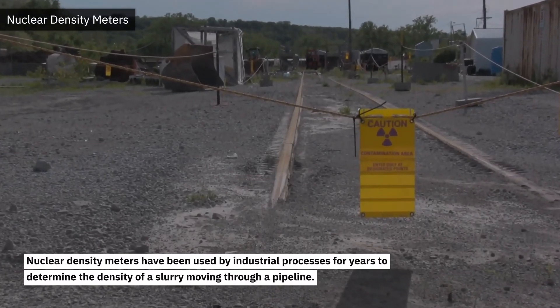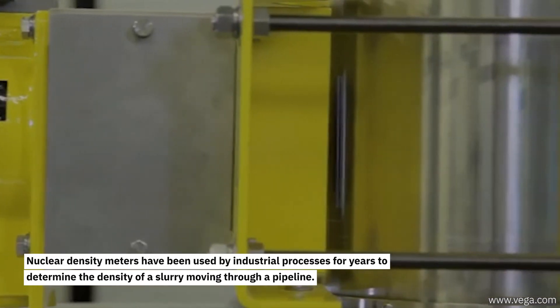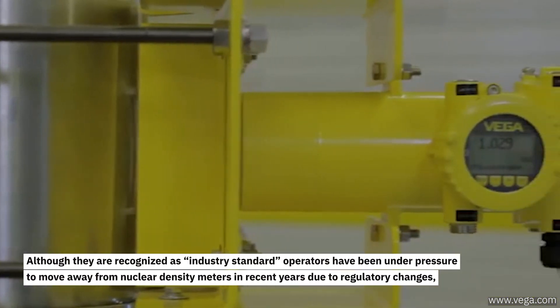Nuclear density meters have been used by industrial processes for years to determine the density of a slurry moving through a pipeline. Although they are recognized as industry standard, operators have been under pressure to move away from nuclear density meters in recent years.